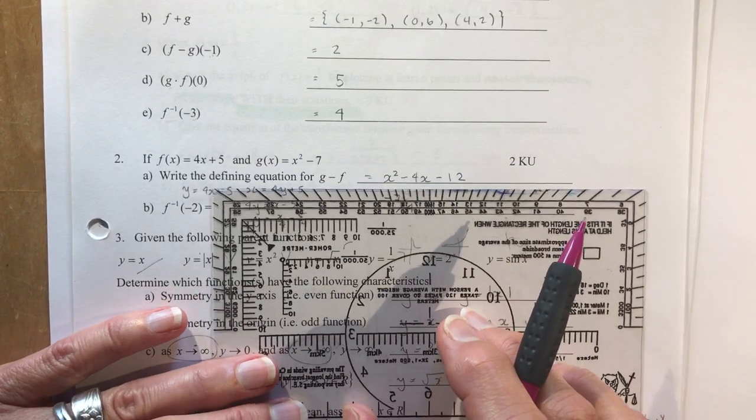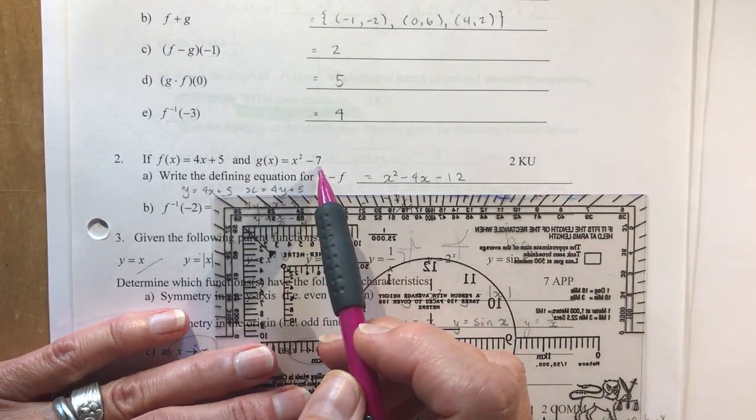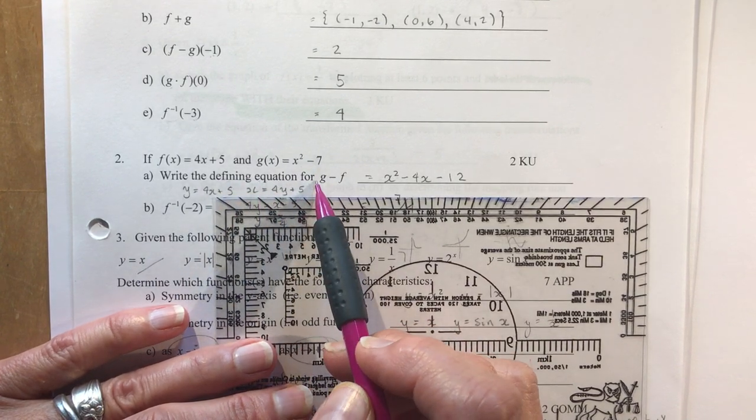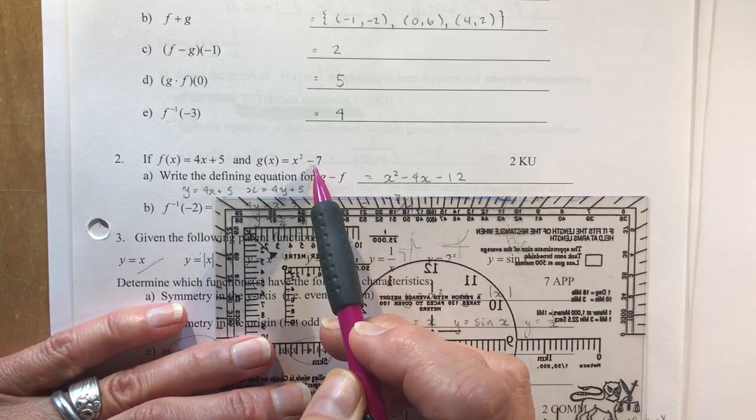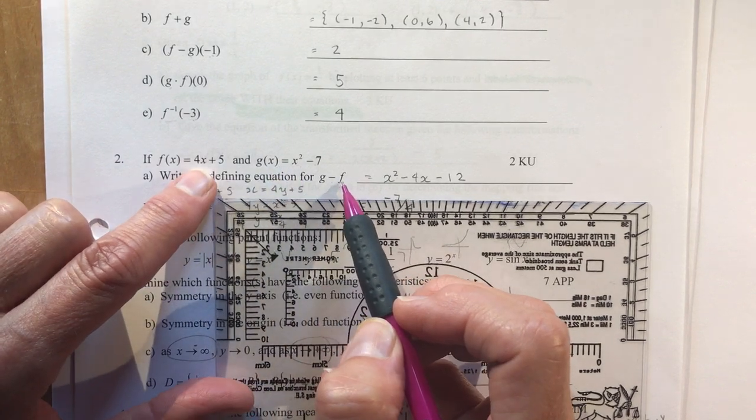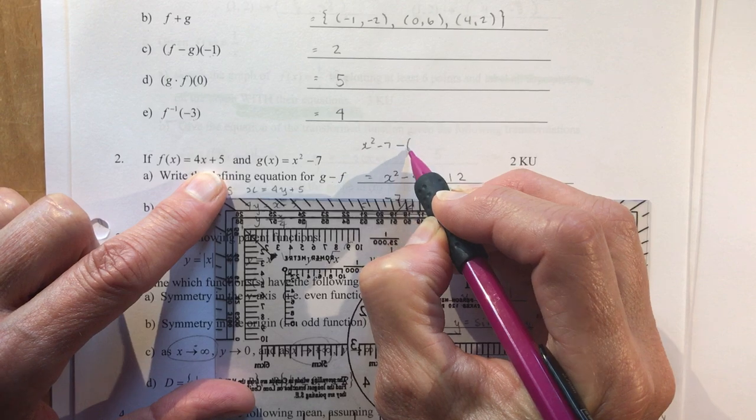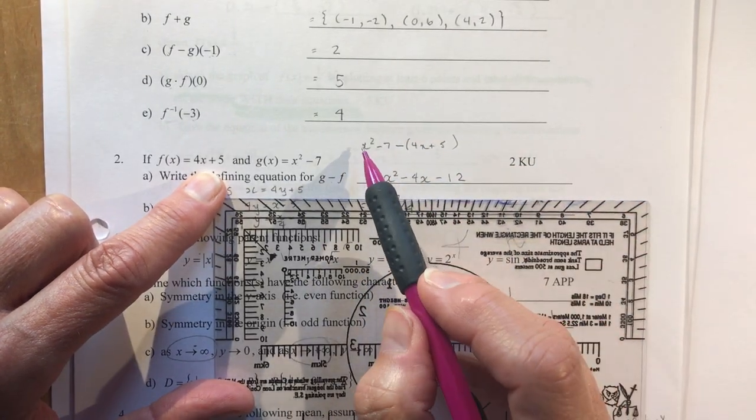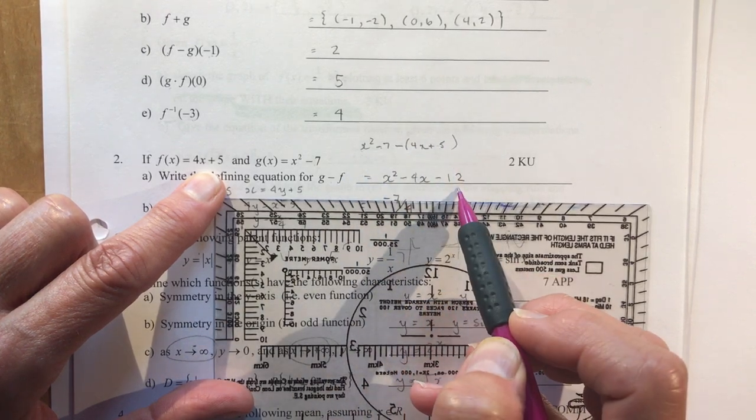Four minus three becomes minus three and four. So this is going to be minus three, four when I do the inverse operation. So my answer is going to be four. Okay, number two, if f at x equals four x plus five and g x equals x squared minus seven, that looks pretty similar to what we did just in the last lesson. Write the defining equation for g minus f. Okay, so this is g and I'm subtracting x or f, sorry.